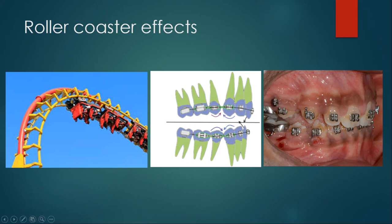The roller coaster effect looks similar to a roller coaster. In the initial days of straight wire appliance, the basic mechanics was used to retract the upper anterior teeth or the lower anterior teeth by Class 2 elastics on lighter wires. On space closure, there was deepening of the bite, opening of a lateral open bite, and some counterclockwise rotation of the molars — and they used to call it the roller coaster effect. That is the most authentic definition and is found in textbooks.